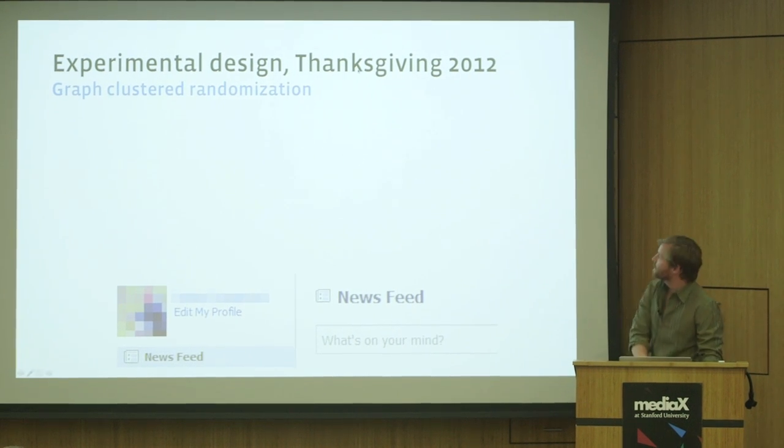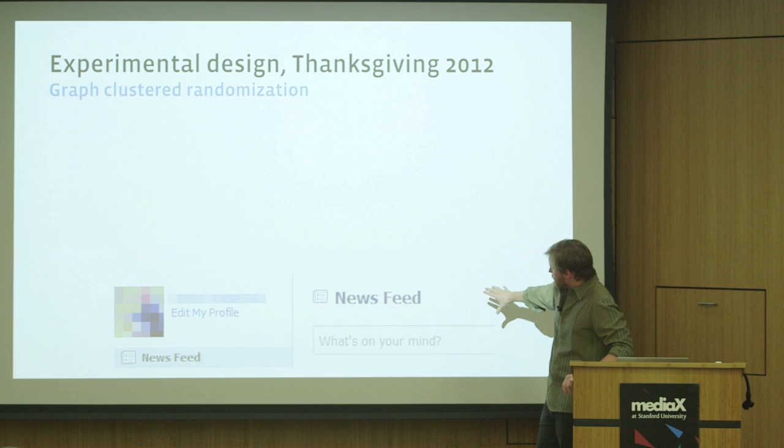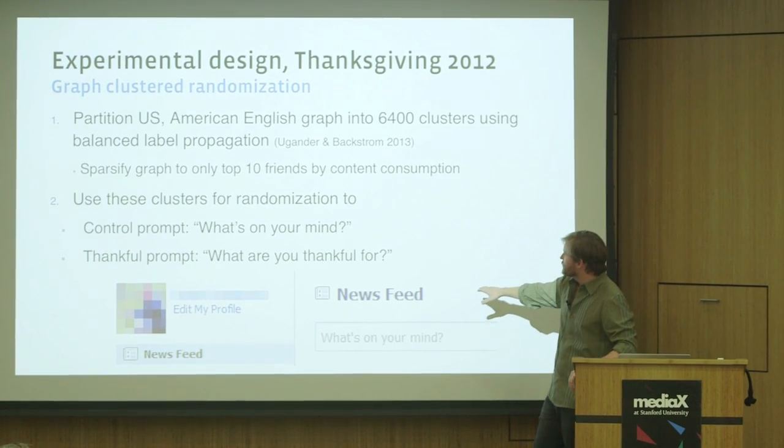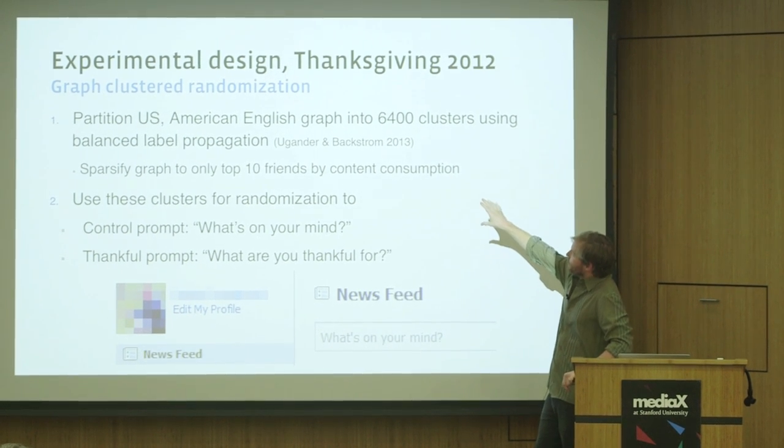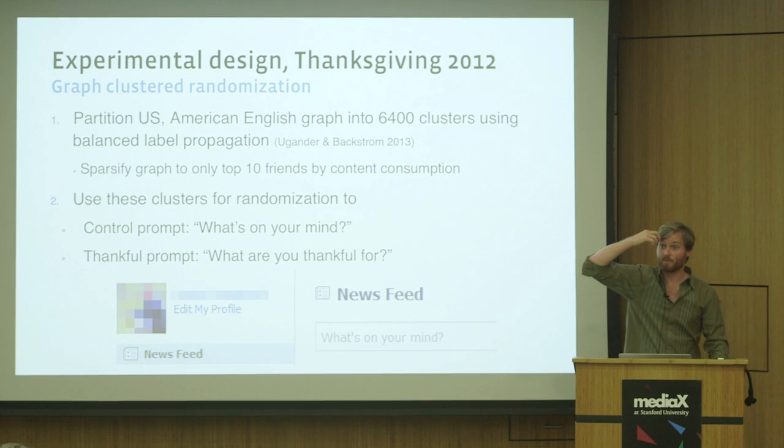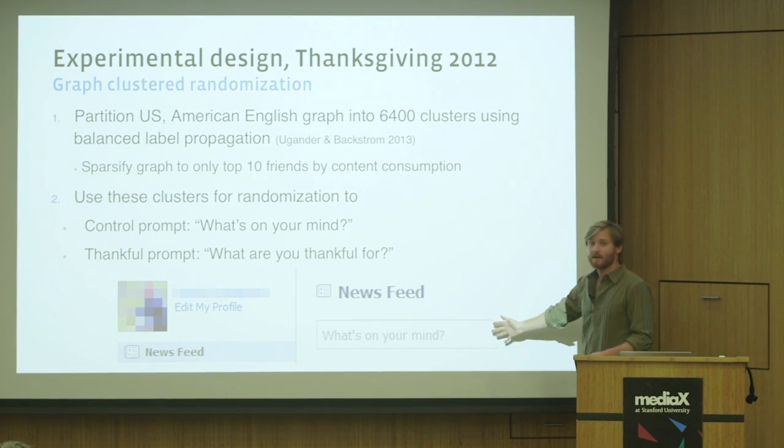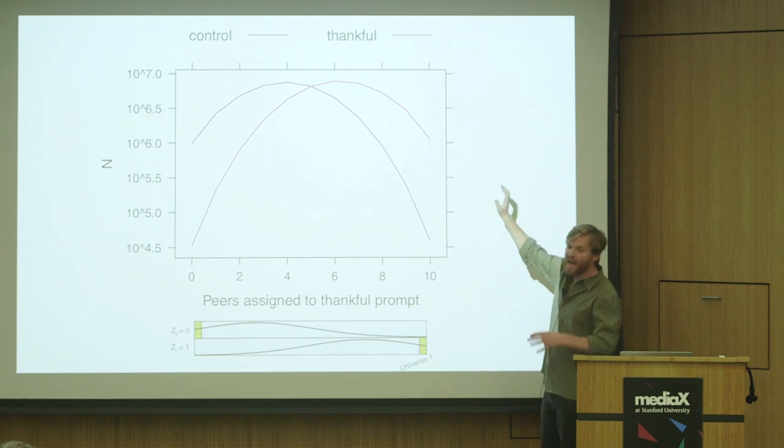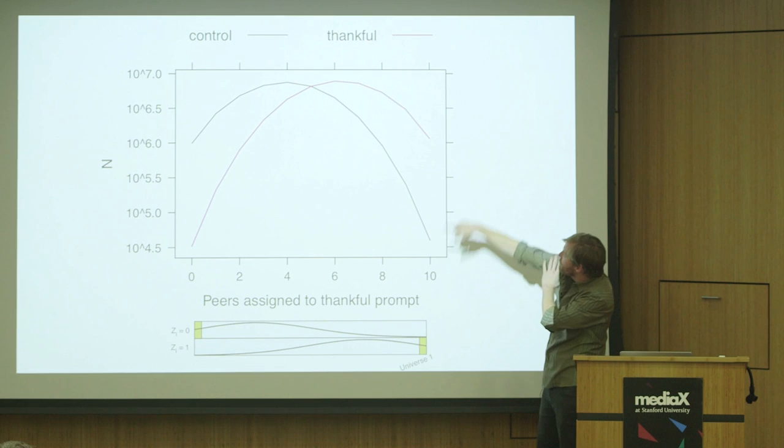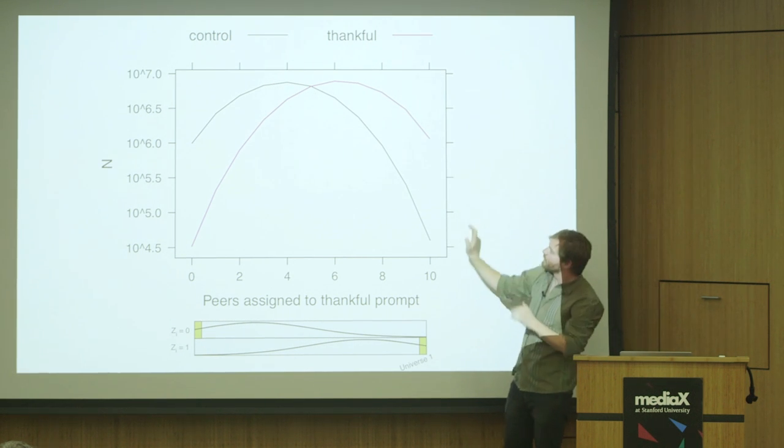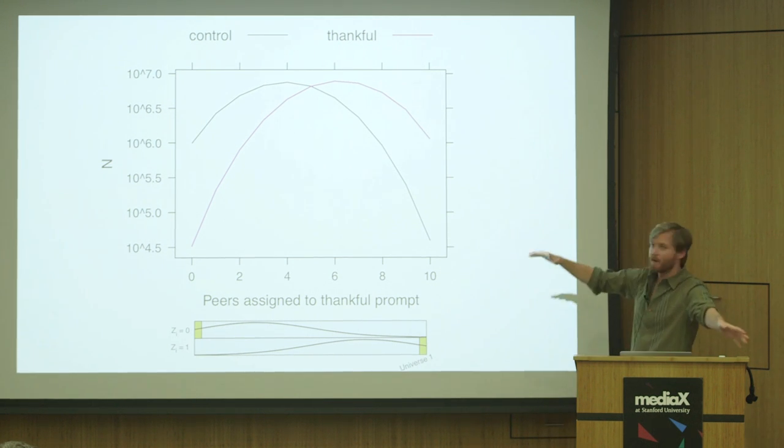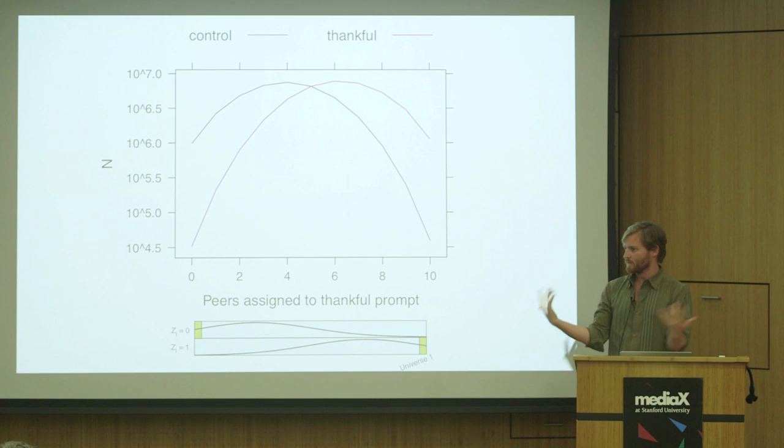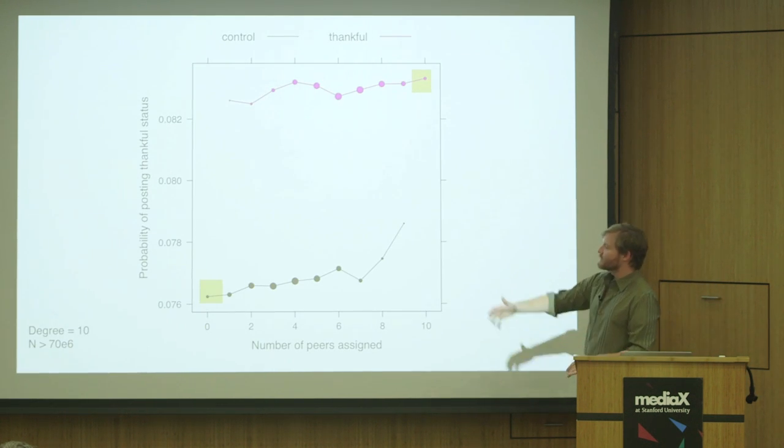An example of how we can use this is: this is a portion of the Facebook home page that says 'What's on your mind?' in the box where you post your status update. On Thanksgiving day, we've actually done a series of experiments in this way. This is from 2012. We partitioned the United States into 6,400 clusters using balanced label propagation, and then assigned some of the clusters to the control prompt of 'What's on your mind?' and some to the thankful prompt of 'What are you thankful for?' Actually, because we did this partitioning, we're able to get more people who have friends in the same condition as them. So if you have the thankful prompt, you're more likely to have all 10 of your friends also in the thankful prompt. If you're in the control prompt, more of your friends are likely to be in the control prompt as well. We sort of successfully pushed people into these more surrounded environments of having a homogenous local experience.